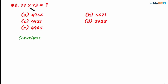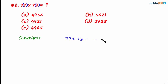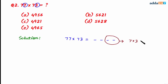Question number two: we have to find the product of 77 and 73. In 77 and 73, the sum of the units digits — 7 and 3 — is 10, and the tens digits are the same, both 7. When such is the case, the product has 4 digits. The last two digits are the product of the units digits: 7 multiplied by 3 equals 21, so we have 2 and 1.